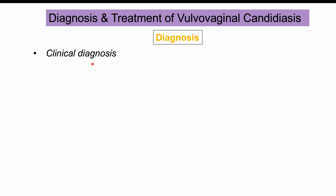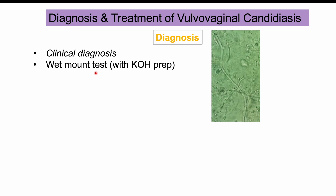Diagnosis of vulvovaginal candidiasis is often clinical, based on history and physical examination. Patients frequently self-diagnose. If laboratory confirmation is needed, a wet mount test can be performed — vaginal discharge is placed on a slide and examined under the microscope. KOH (potassium hydroxide), usually 10–20%, can be added to lyse cellular debris such as white blood cells and epithelial cells, allowing clearer visualization of candida hyphae.